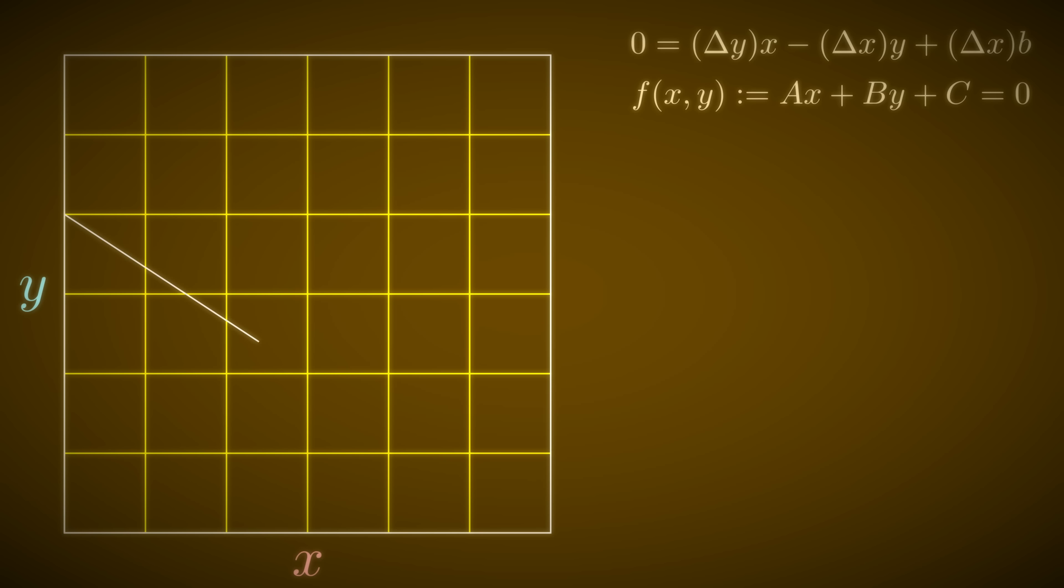Now let's move one step at a time horizontally across our line. We increment x by one, but should y also increase? Or should it stay the same? To figure this out, let's look at the halfway point between the two y-pixels.